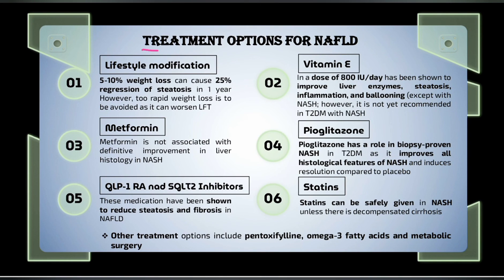Regarding treatment options for NAFLD: approximately 5 to 10% weight loss can cause about 25% regression of steatosis in one year. However, too rapid weight loss should be avoided as it can worsen liver function tests. Vitamin E can be given at a dose of 800 international units per day, as it has been shown to improve liver enzymes, steatosis, and inflammation. Ballooning can also be treated with this approach.